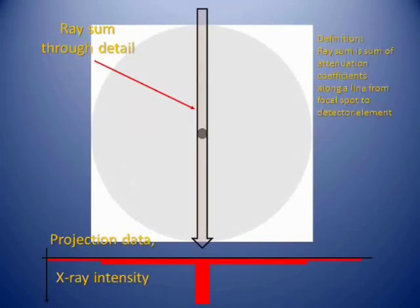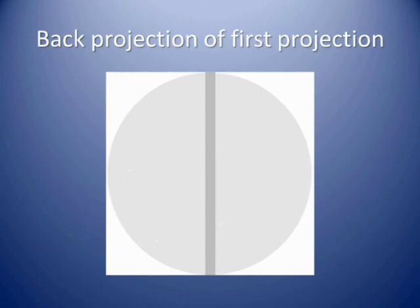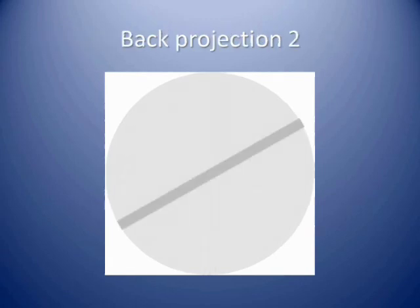If we look at the ray sum through the detail, you can see there is a considerable dip in the projection data. As a first step in reconstruction, we assume that the dip is due to a uniform material within the ray sum that has the same effect as the actual detail does, and we back project the ray sum along that direction.